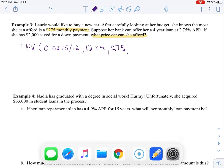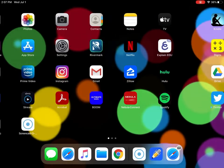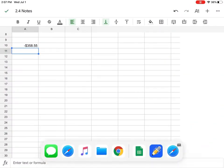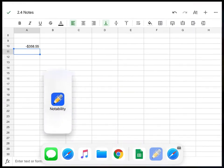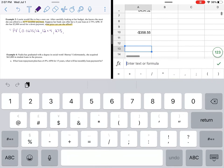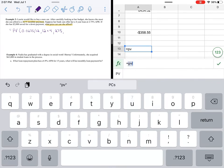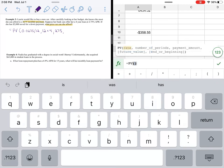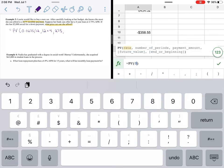So let's go ahead and bring up the spreadsheet. When I put in equals PV, there's my function. There's my rate, 0.0275, divide that by 12.